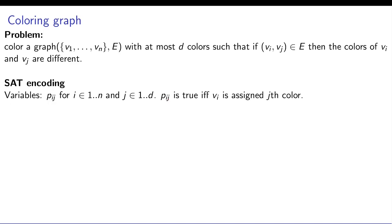Let's call them p_ij, where i ranges from 1 to n and j ranges from 1 to d colors. If p_ij is true, then node v_i is colored with jth color.